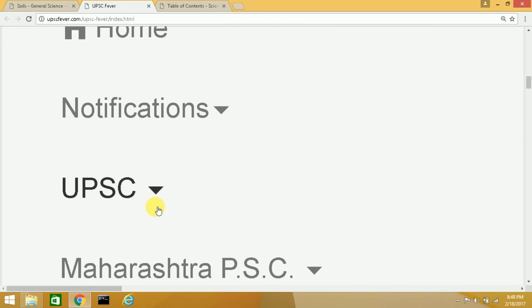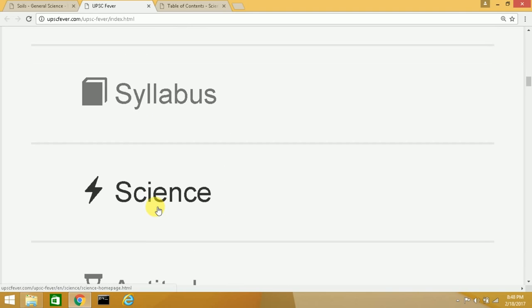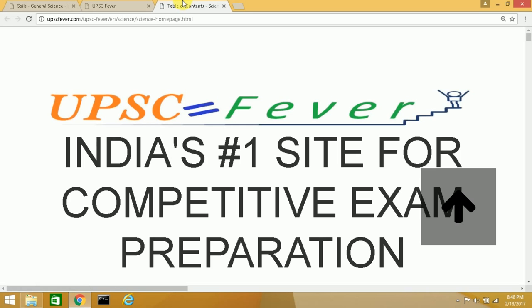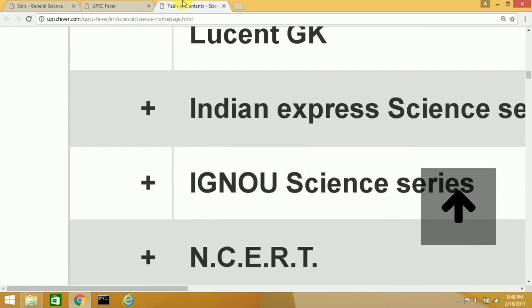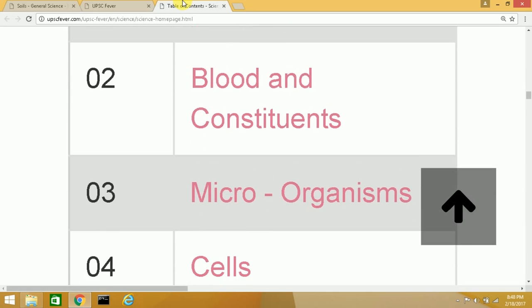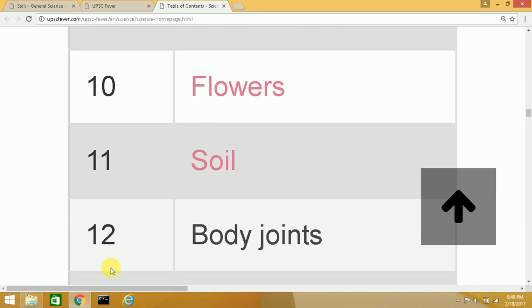And then you will see science. You click on science, you get this page. This has a table of contents. Today we saw the chapter on soil, which is the 11th chapter, and the next chapter shall be on biology, which is body joints. So thank you and all the best.